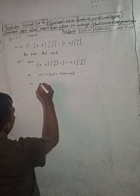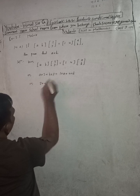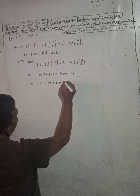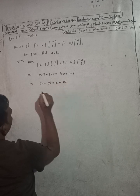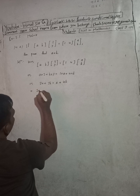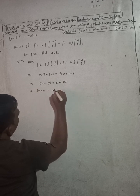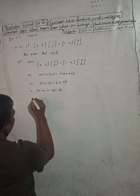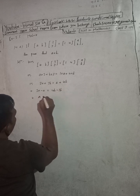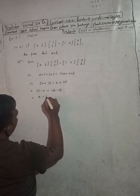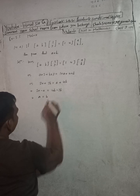So, 2a plus 3b is equal to a plus 4b. Rearranging: 2a minus a is equal to 4b minus 3b, which gives a is equal to b.